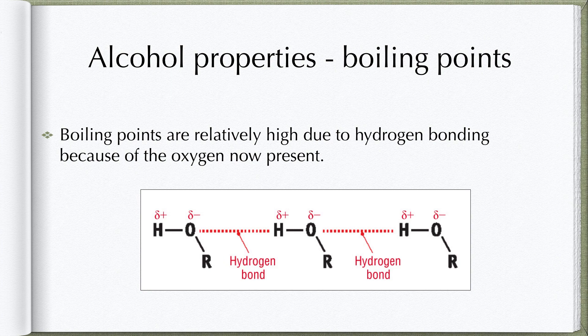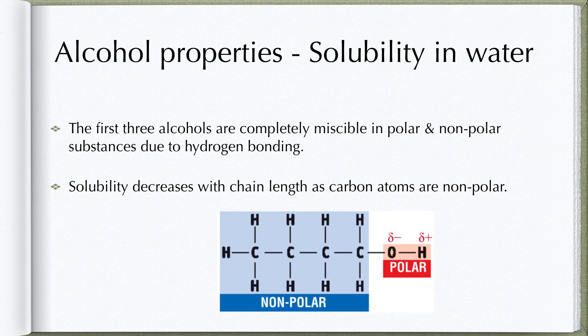Alcohols have high boiling points due to hydrogen bonding between molecules. Hydrogen bonding is why alcohols are liquids and not gases. Boiling points increase with molecular weight. The first three alcohols are completely miscible in water — that is, they dissolve in water. In addition, they also dissolve in non-polar substances. This suggests that the first three alcohols are both polar and non-polar. The OH functional group is polar, which is why they dissolve in water, whereas the carbon chain is non-polar, allowing it to be used as a solvent for oils.